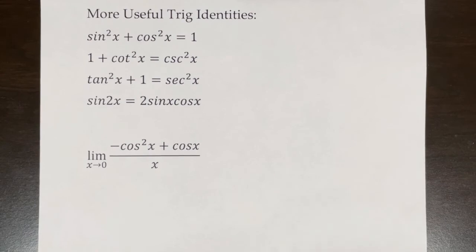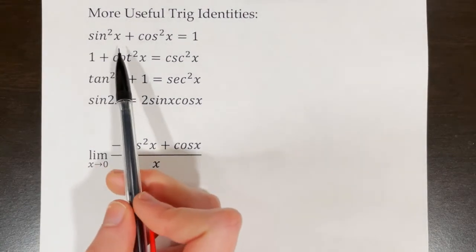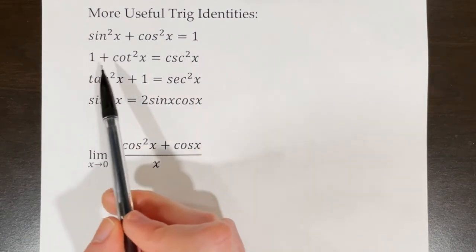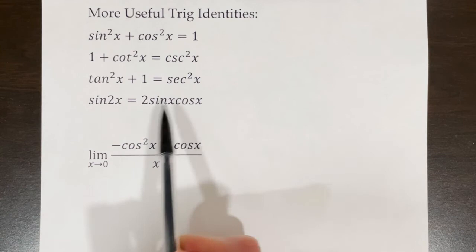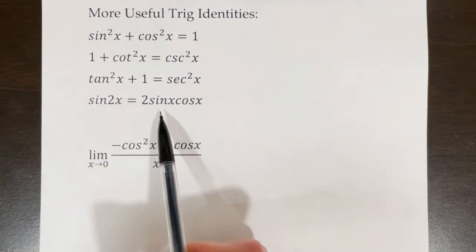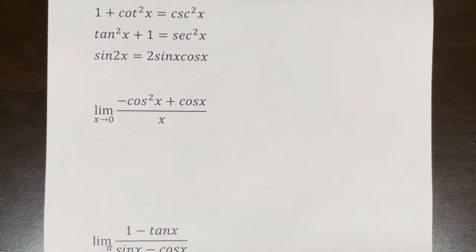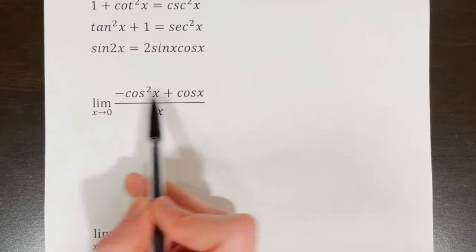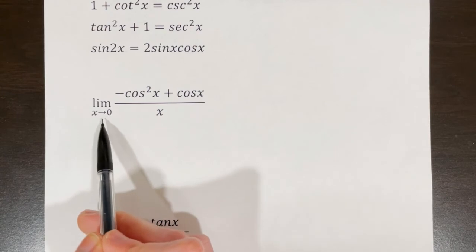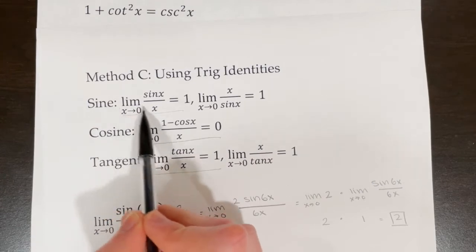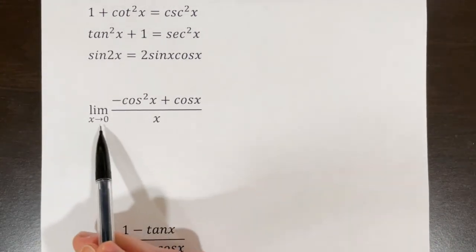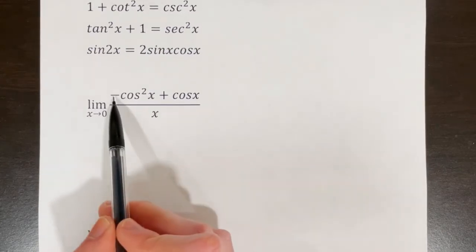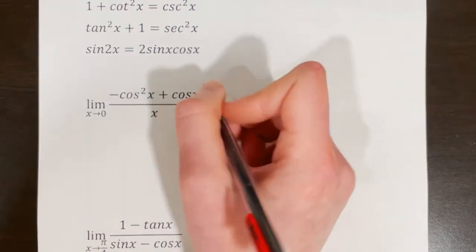Here are more useful trigonometric identities for simplifying limits: sine squared x plus cosine squared x equals 1; 1 plus cotangent squared x equals cosecant squared x; tangent squared x plus 1 equals secant squared x; and the double angle identity, sine of 2x equals 2 sine x cosine x. For the next example, x is approaching 0, so we can use the previous identities. The approach is to factor cosine x out of the numerator.